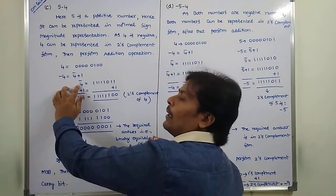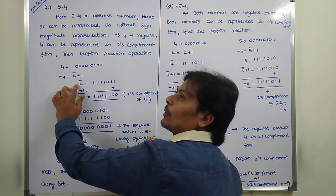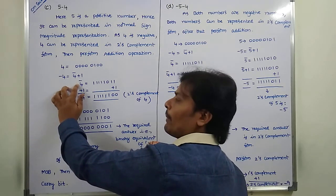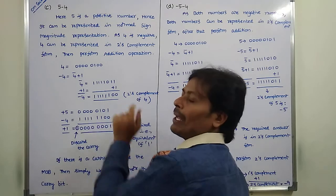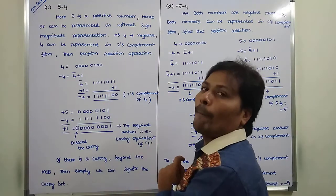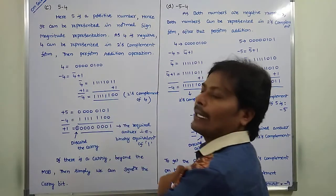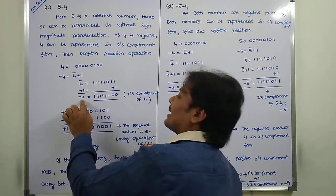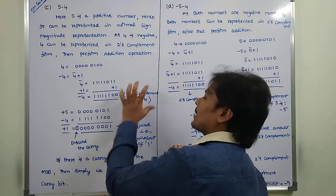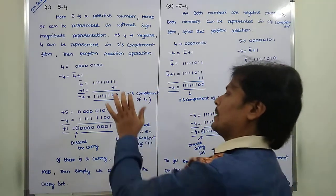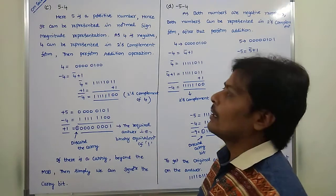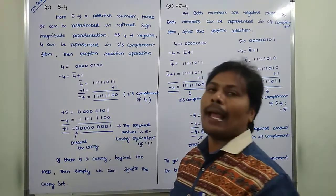To get the two's complement of 4, we take the 1's complement of 4 and add 1 at the LSB side. This plus 1 is added to the 4 complement. The result is a negative number, so the answer is in two's complement form. This answer is the two's complement of 4, that is minus 4.